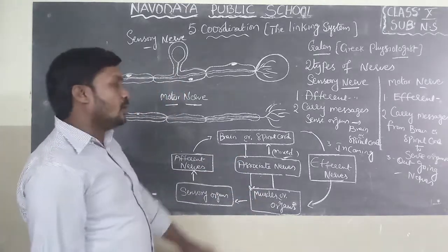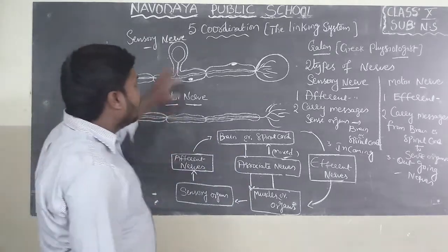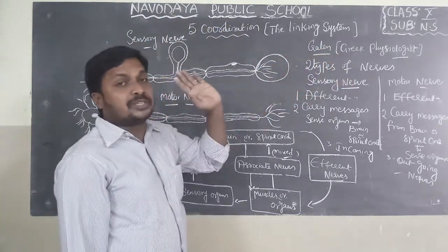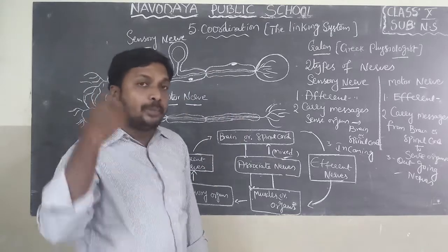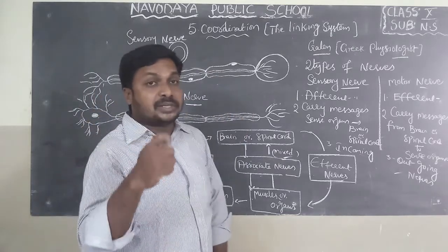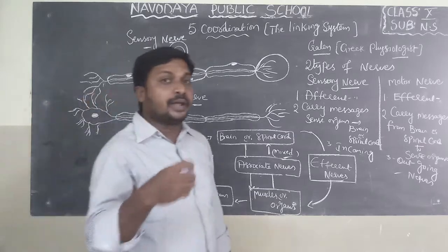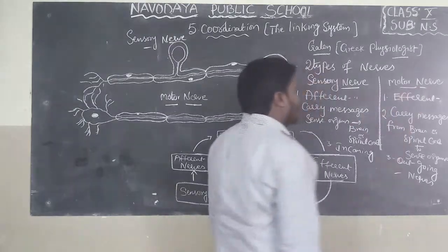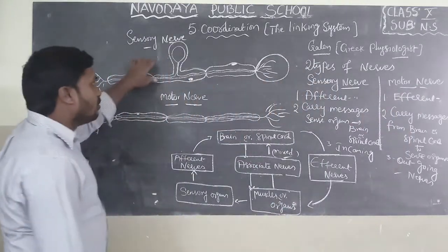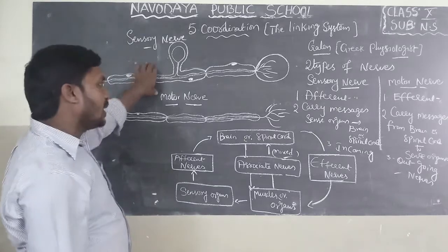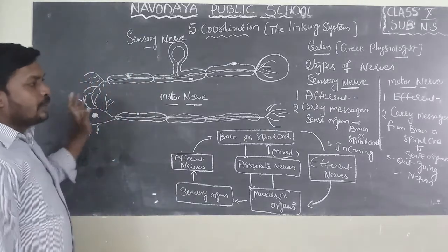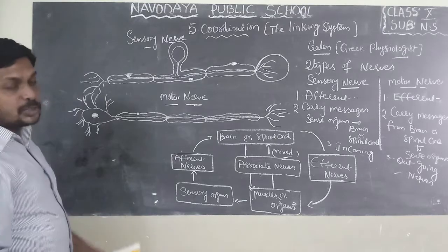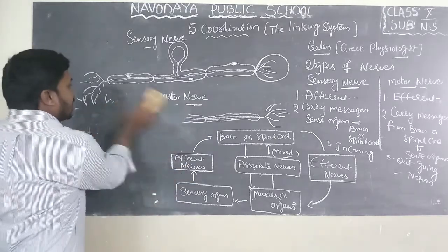This is about the nervous pathway. We learned about two types of nerves according to Galen, a Greek physiologist. One of his patients fell from a chariot, got a blow near the neck, lost sensation but showed movement. Based on this, Galen identified sensory nerves — which carry messages from sensory organs to the brain or spinal cord — and motor nerves.